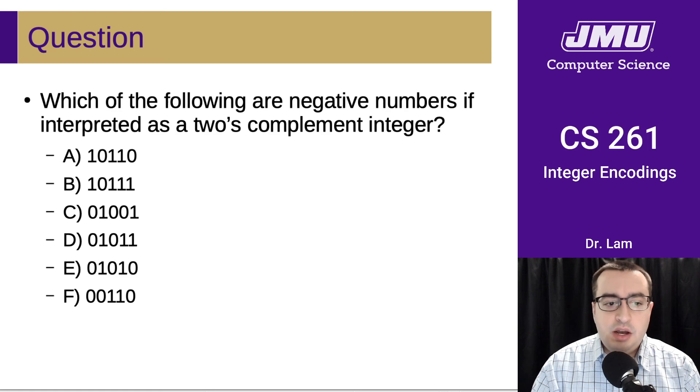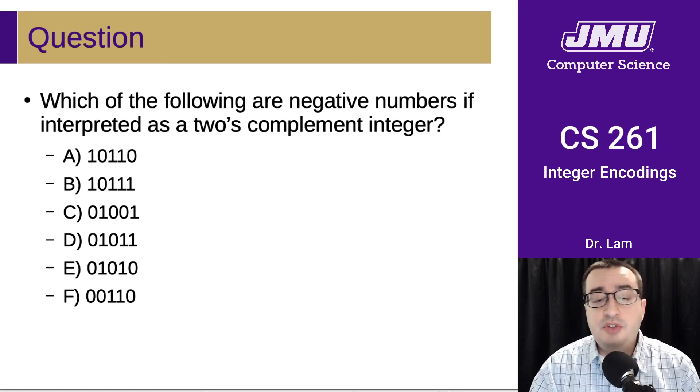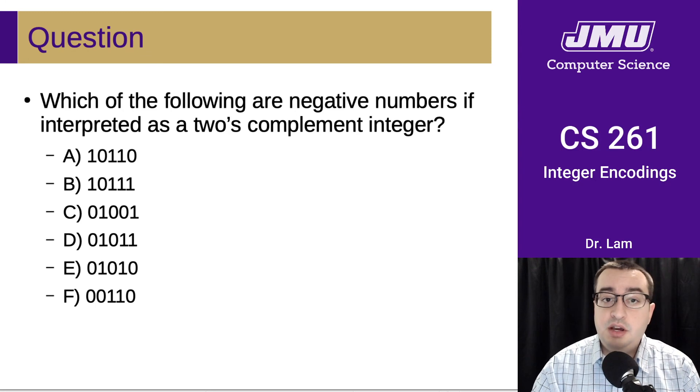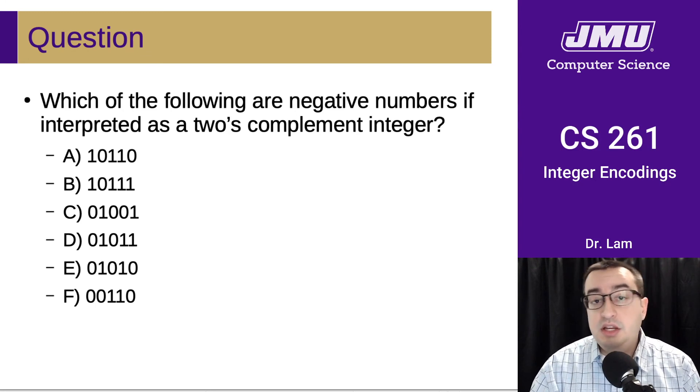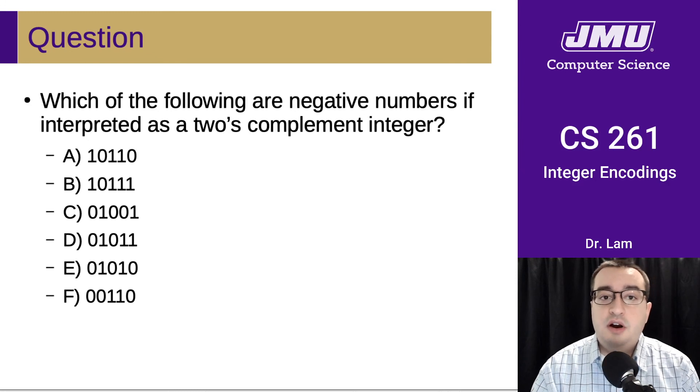So then the last question, which is, so here are those numbers again. And now I'm telling you that we have some bits. The context is that they are two's complement integers. So which of these are negative numbers? So pause the video and see if you can identify those.